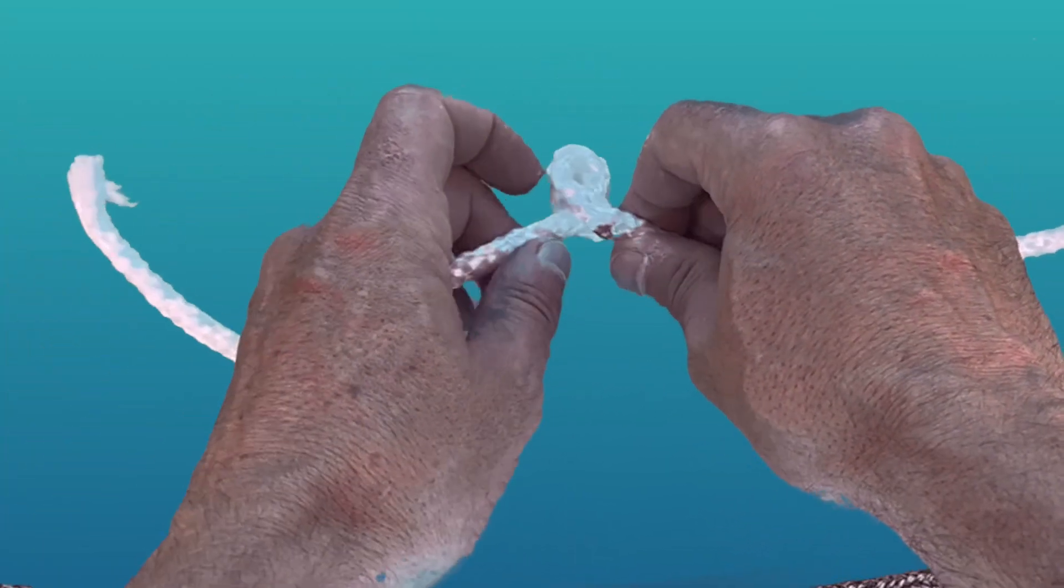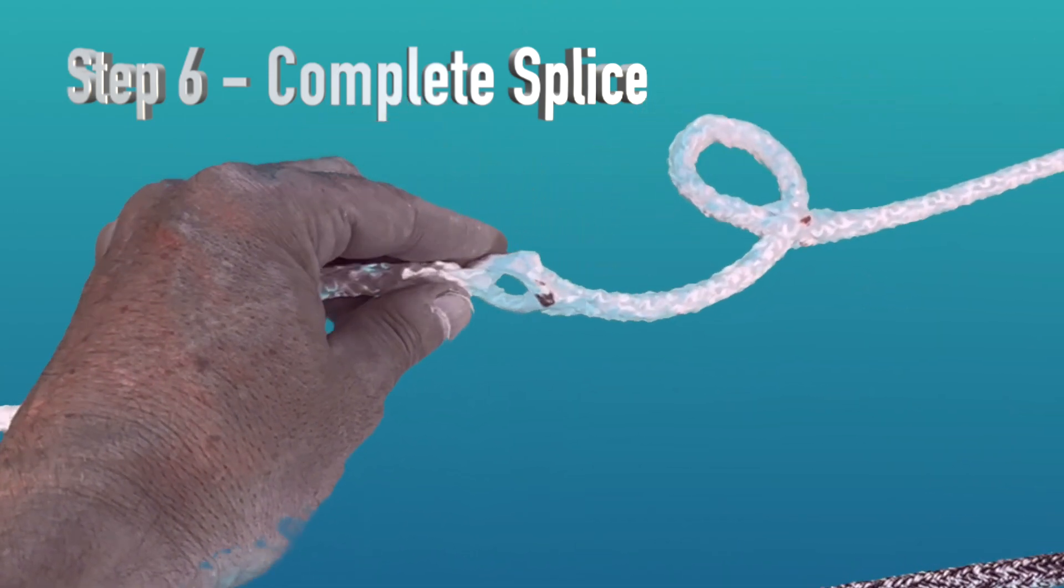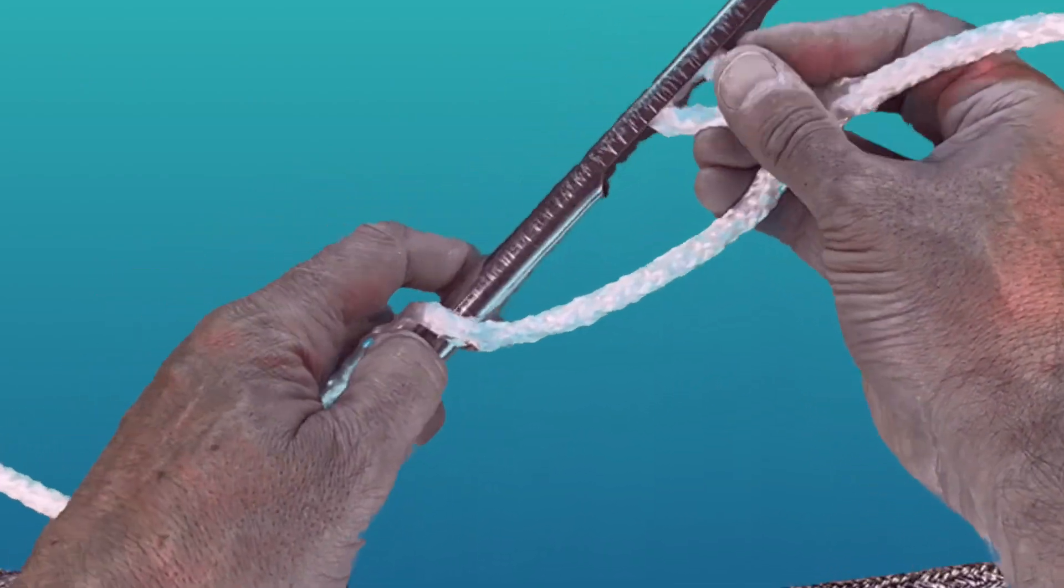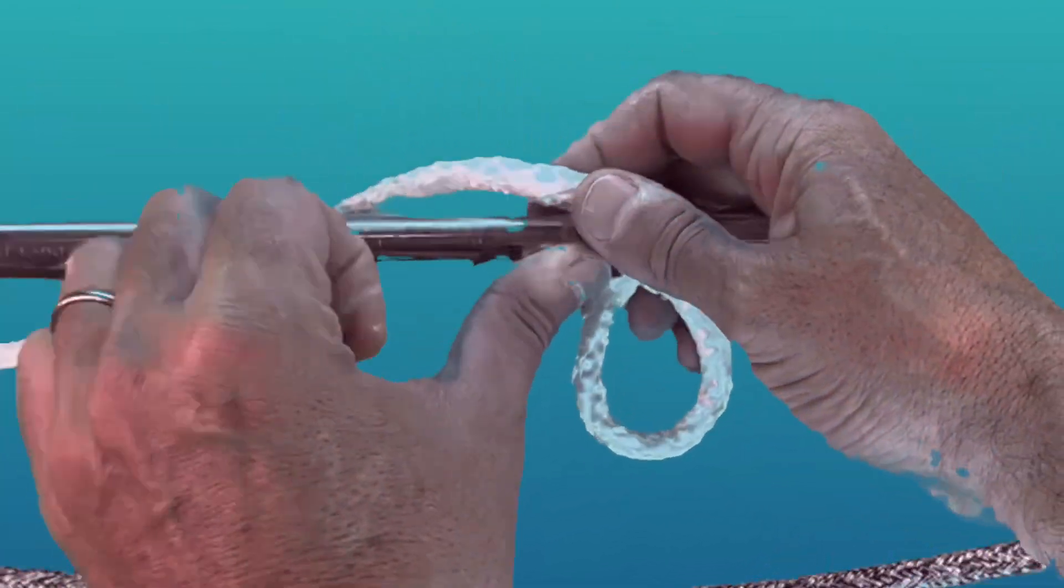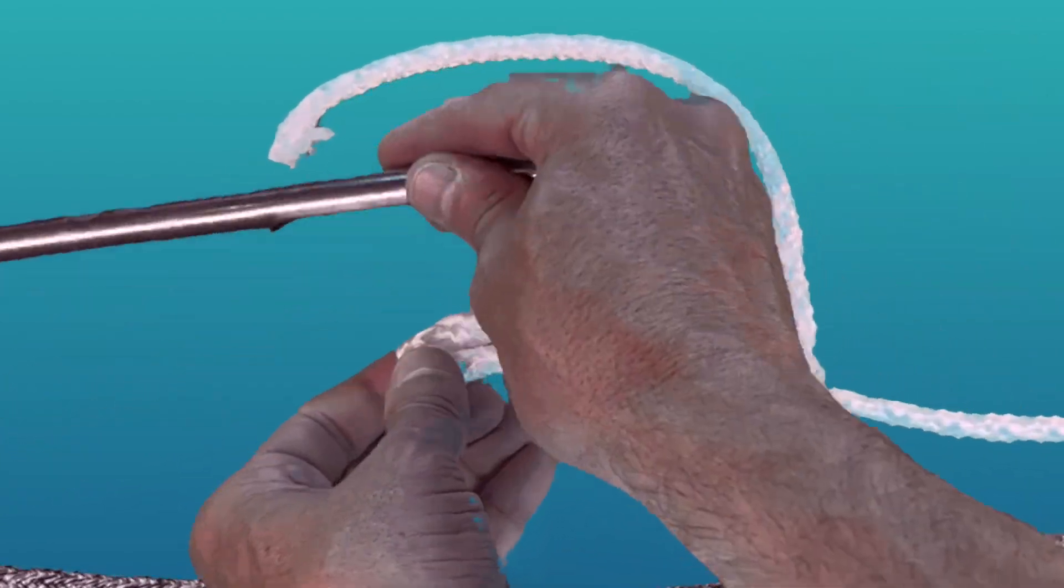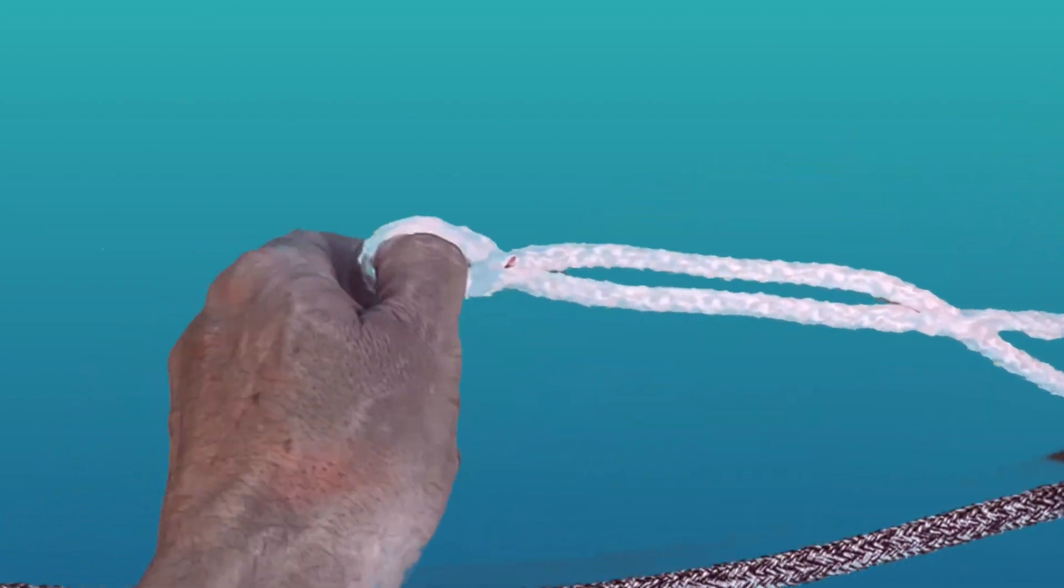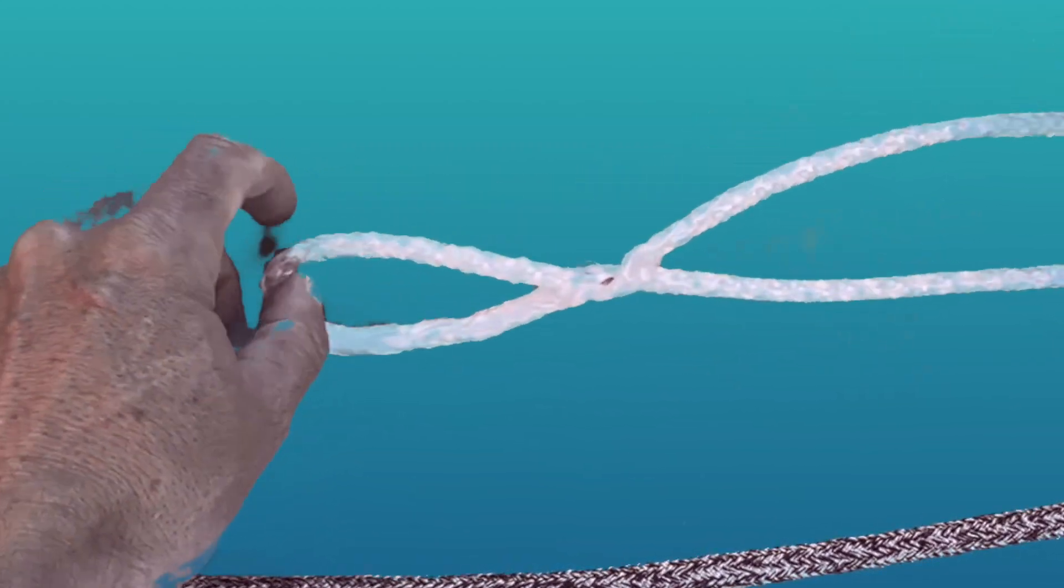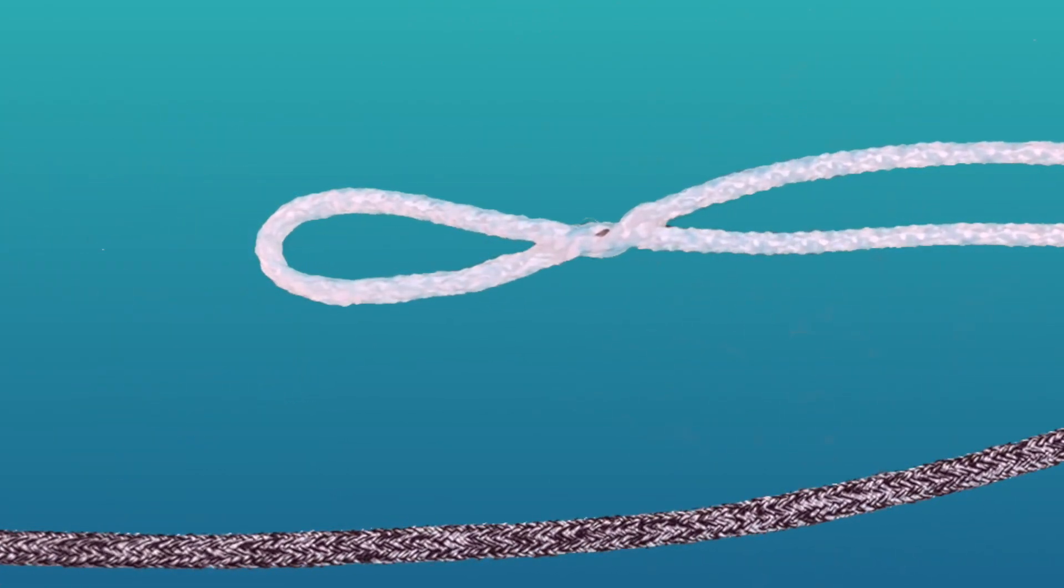For step number six, you want to take the working end and pull the first loop through on itself to create a twist. While keeping the hole open, you put through a big fid that's large enough to take two Dyneemas of the core and then just pop it through on itself. You then want to undo the twist you did in the previous step and just tease the rope to make sure it's all sitting flat. You can then pull it tight and that effectively completes your eye with the Brommel locking splice now in place.